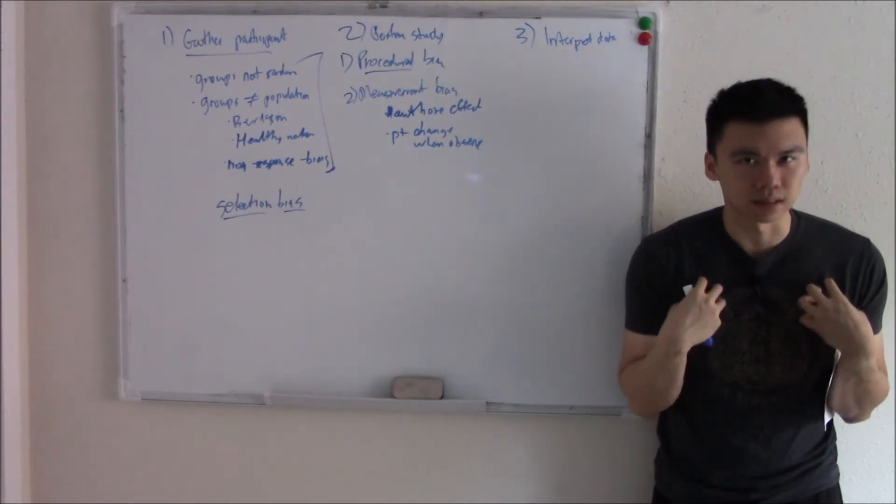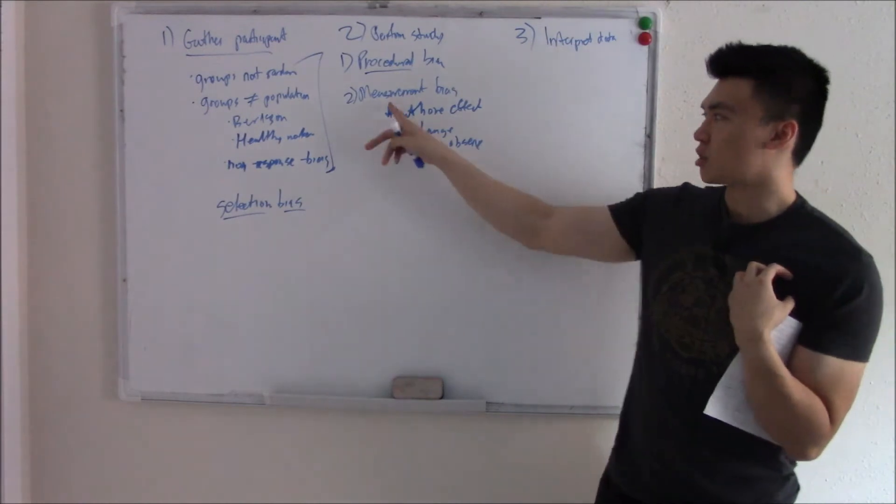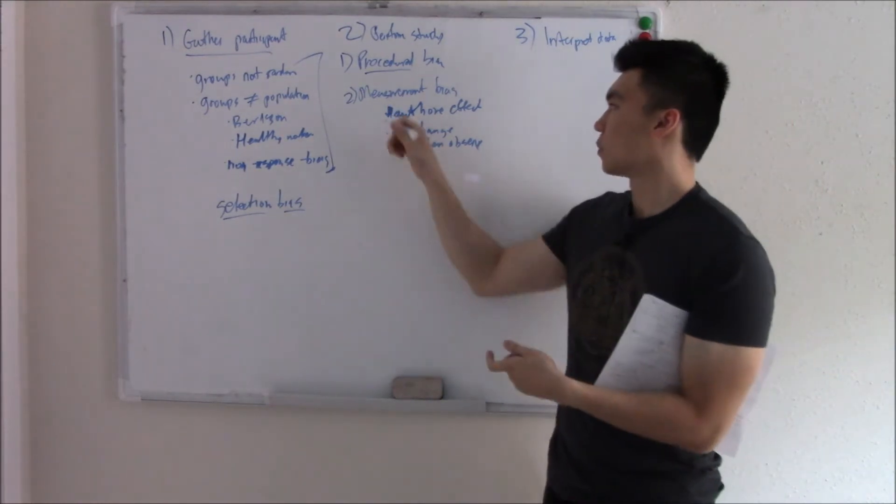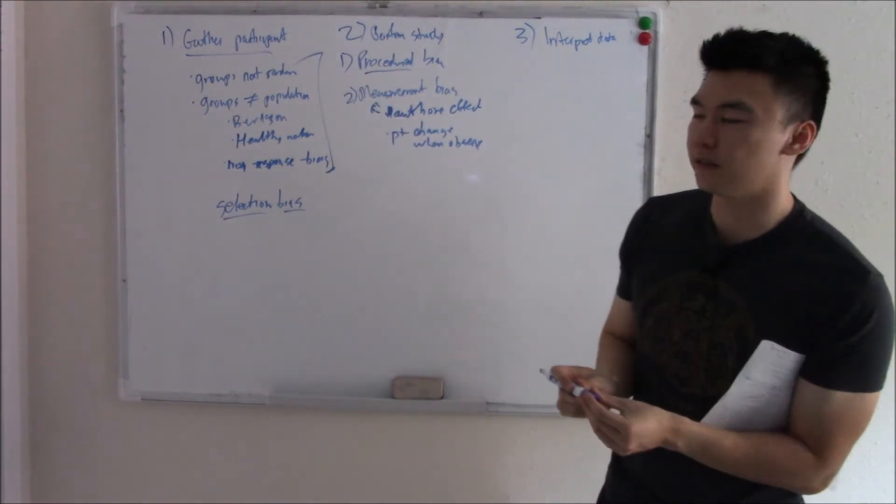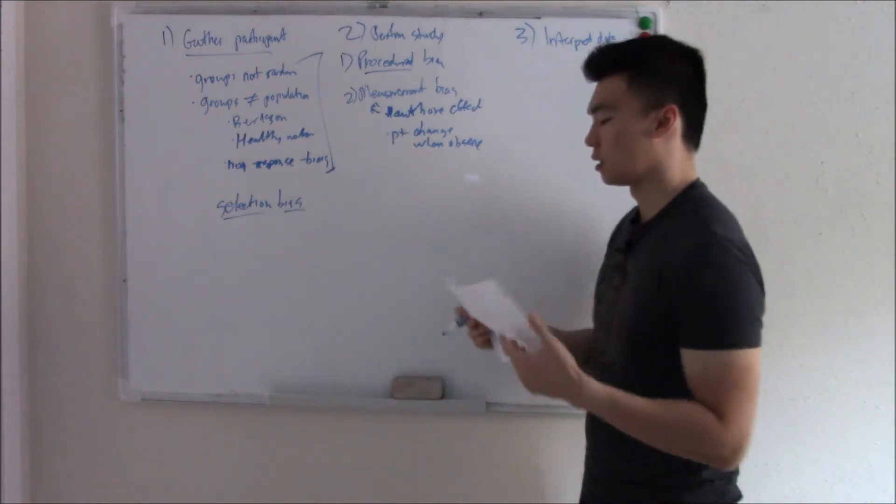So they might say, oh, that's six out of 10. Doesn't that change your measurement? Measurement bias. That's the Hawthorne effect. Patients change when they're being observed.